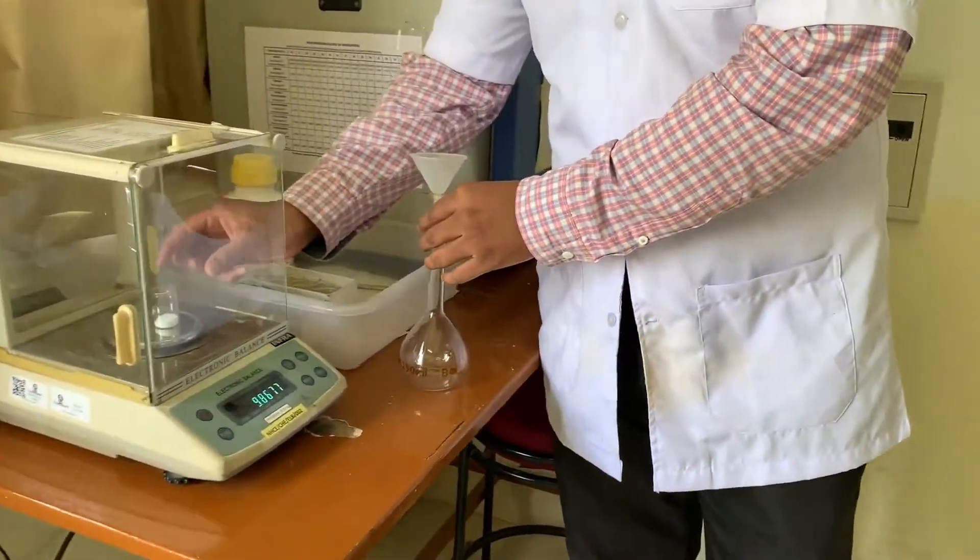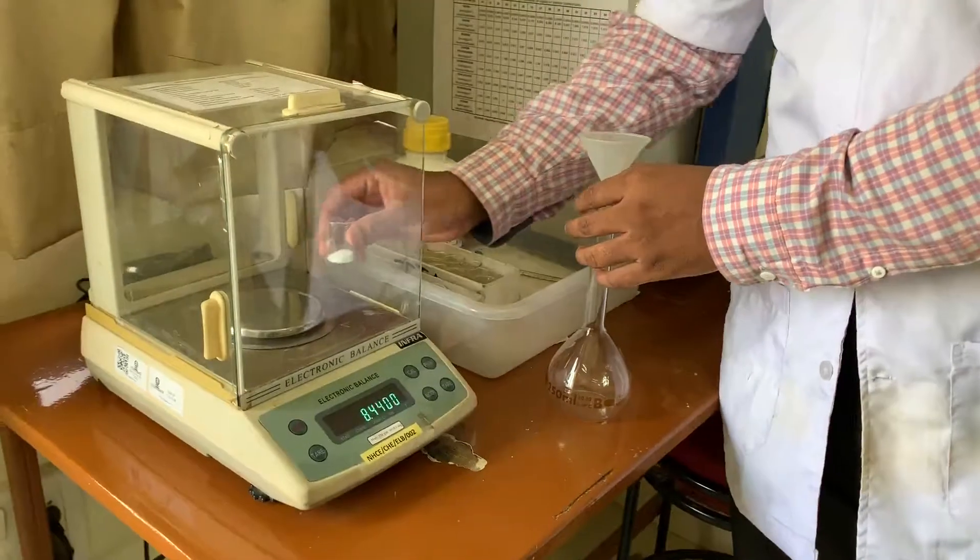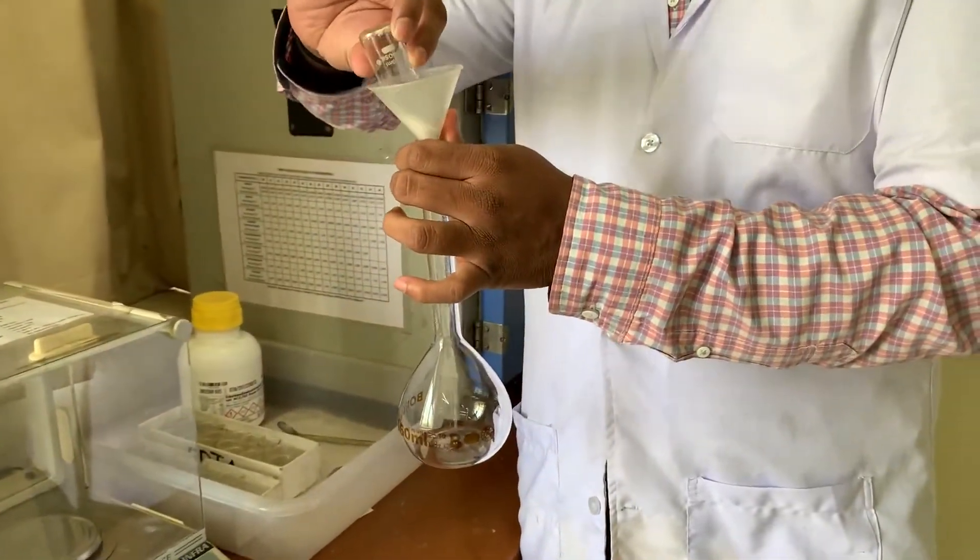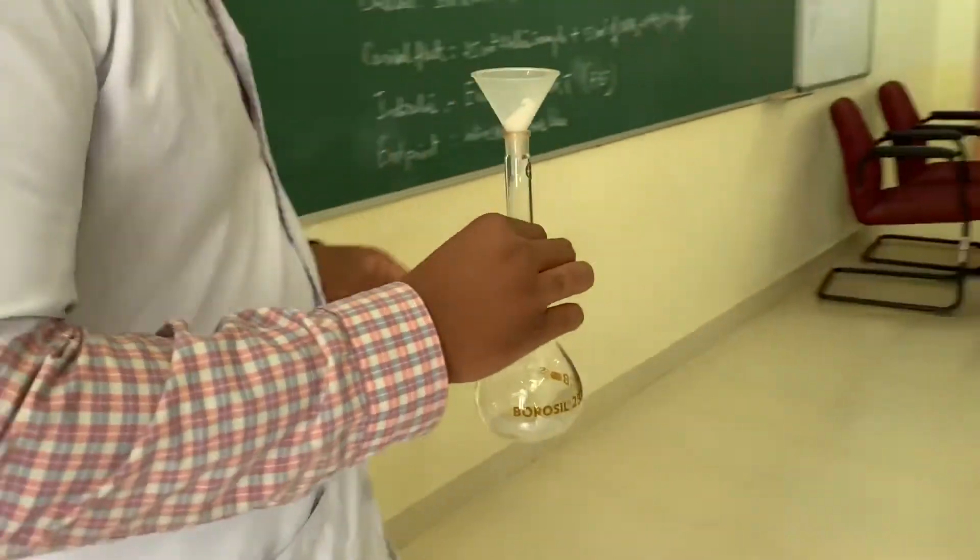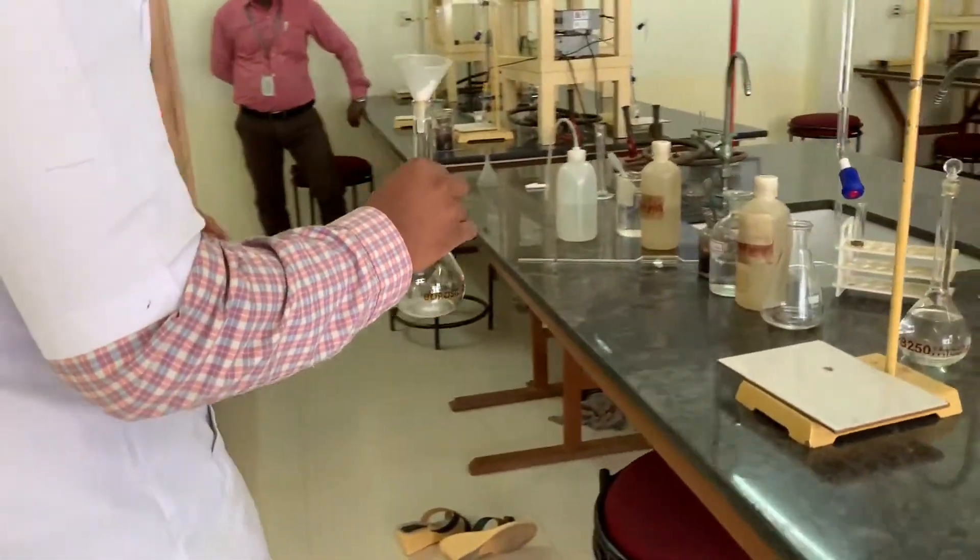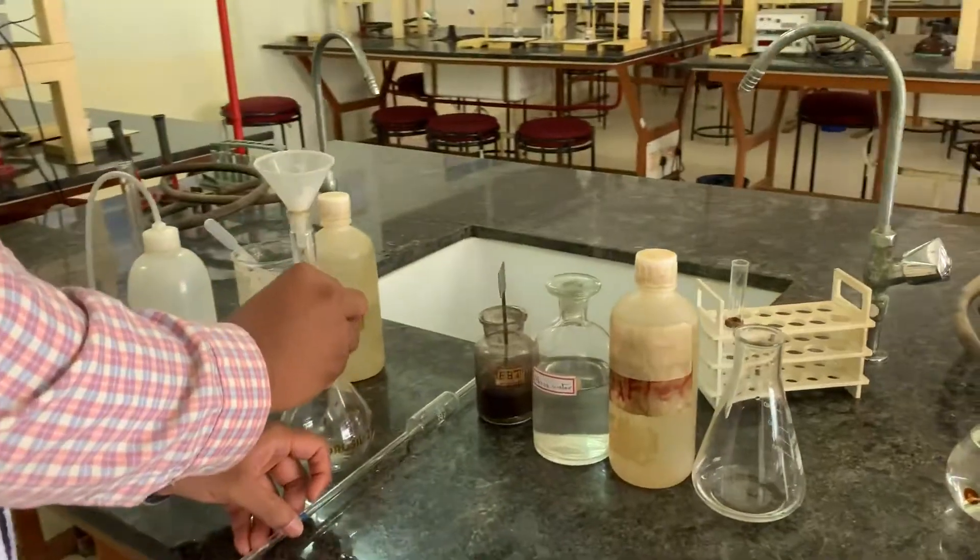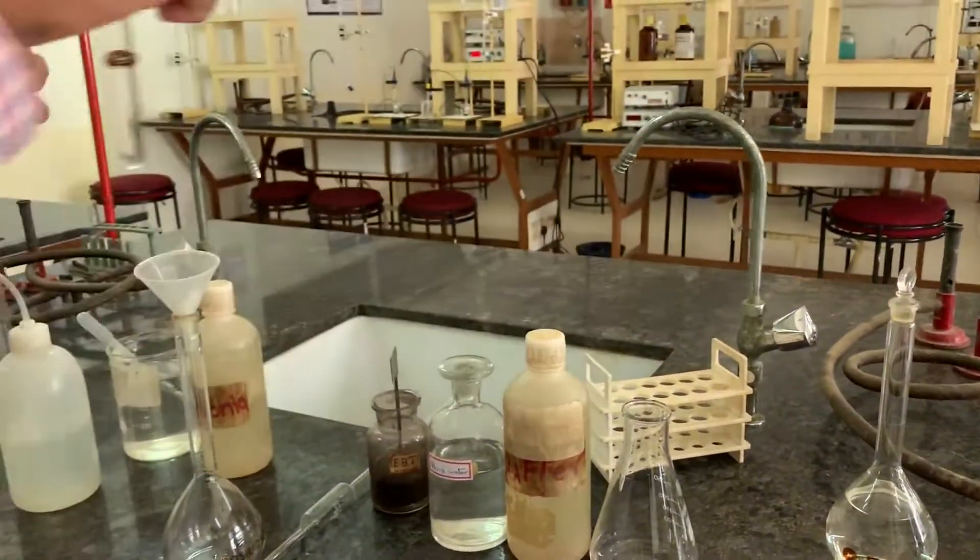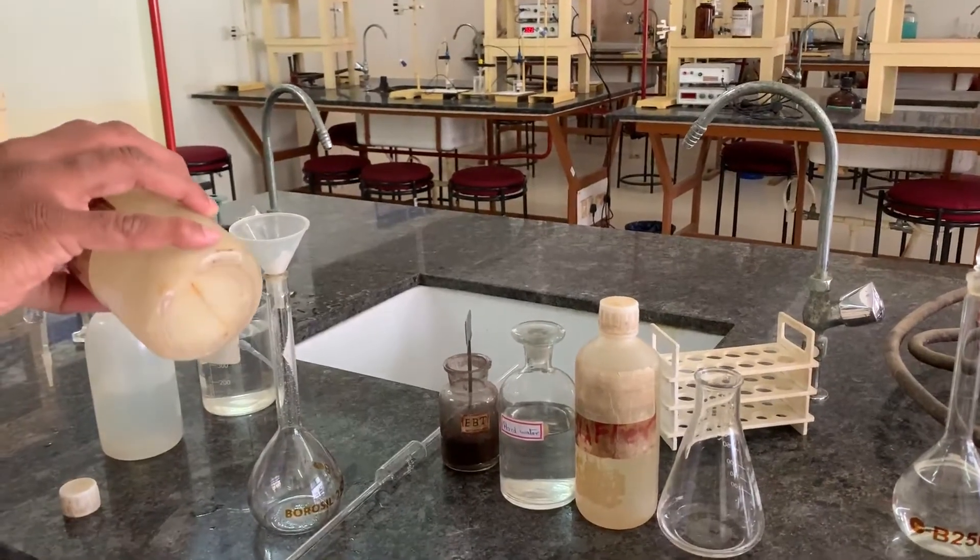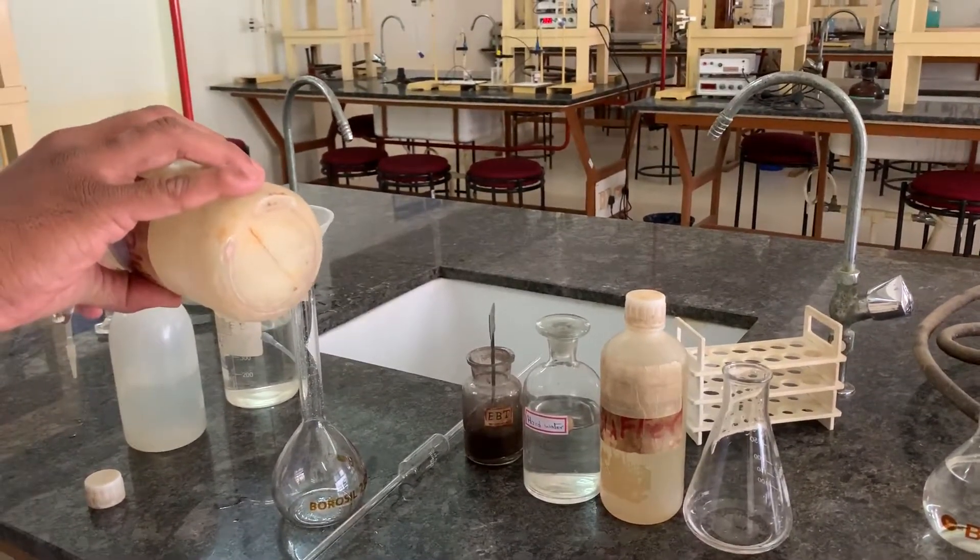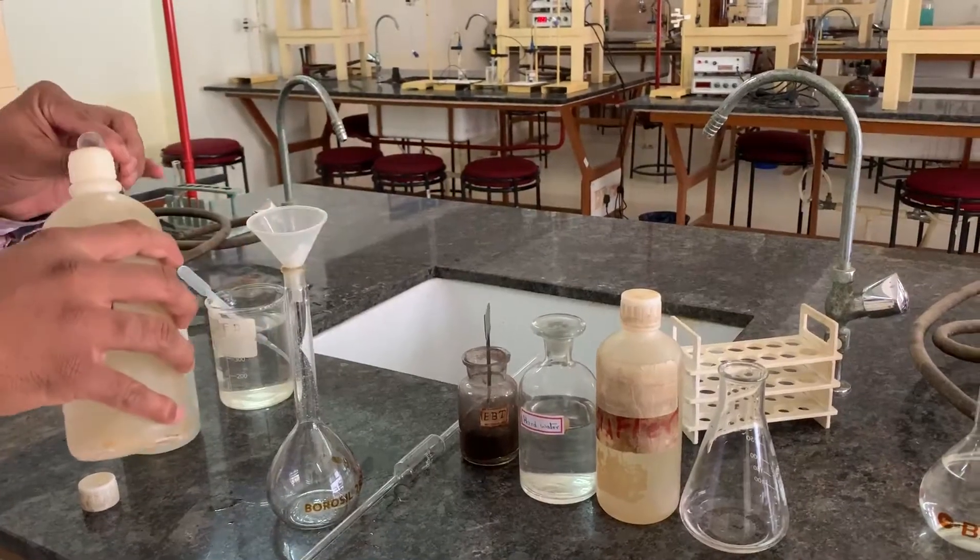Standard EDTA salt will be accurately weighed and transferred into the funnel placed over the standard flask. Then half a test tube of ammonia is added to enhance the dissolution of EDTA salt.